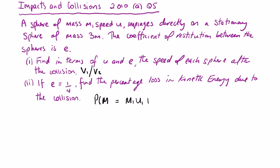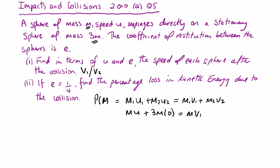The principle of conservation of momentum is m1*u1 + m2*u2 = m1*v1 + m2*v2. So the mass of the first sphere is m and the second is 3m. So m*u + 3m*0 = m*v1 + 3m*v2. Dividing by m gives u = v1 + 3v2.